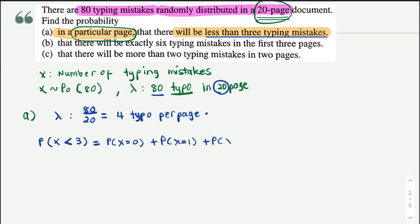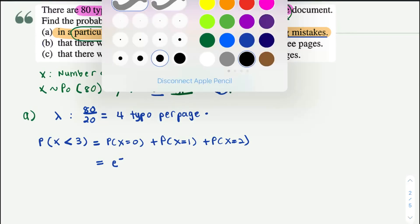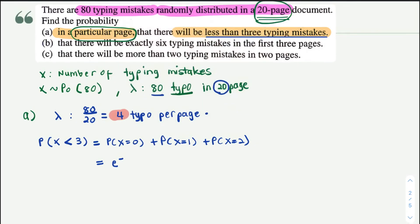Now P(X = 3), does it included? No it is not, because there is no equivalent sign. So substitute into the formula of Poisson distribution where e^(-λ). Now your lambda already changed into 4.